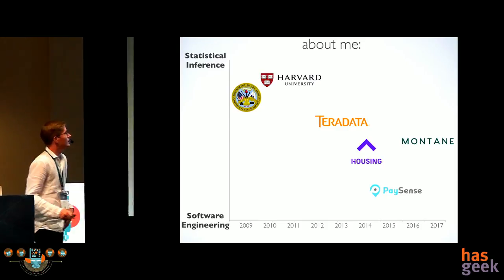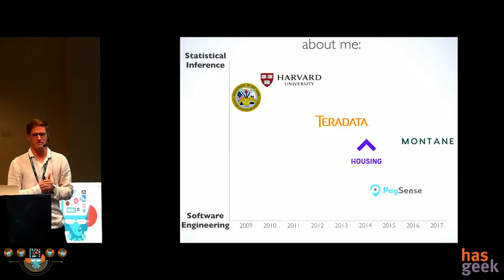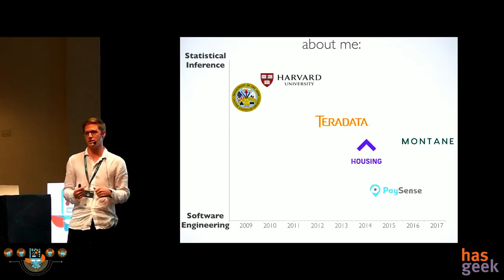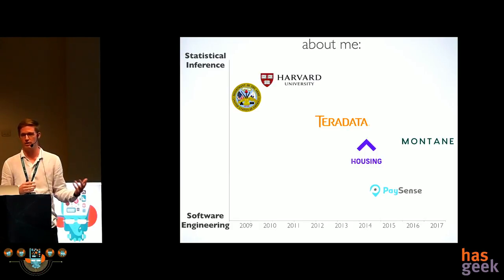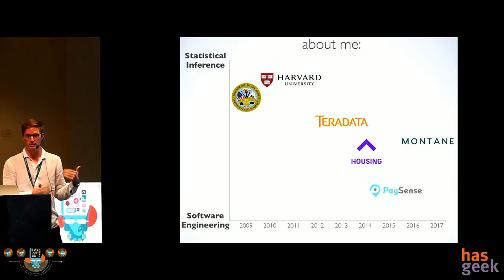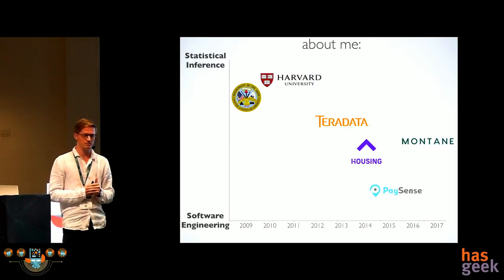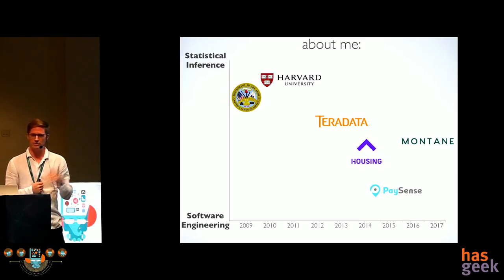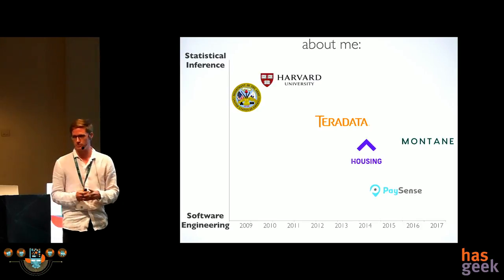My professional experience has oscillated between two key themes. One is statistical inference — thinking about how you ask questions about causality from data to inform decision making. The other is engineering and software, because you can develop complex models for causal inference, but until they can go into production and deal with all the dirty problems of getting data from one place to another, it stays pretty academic.